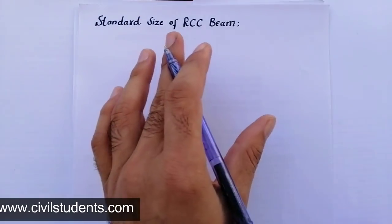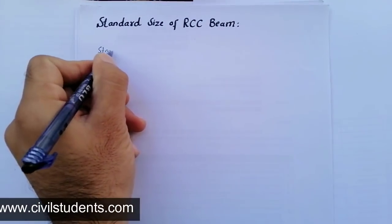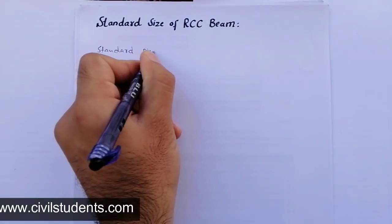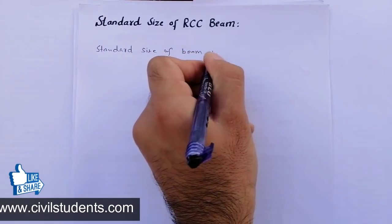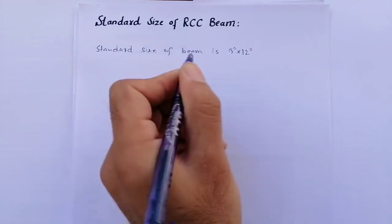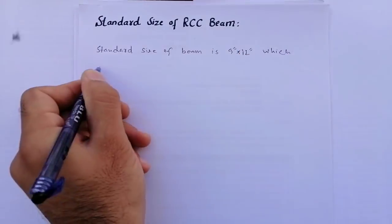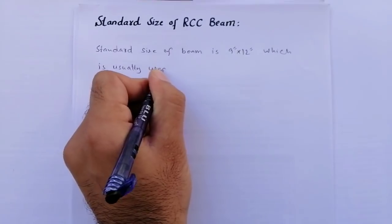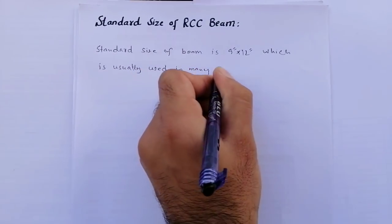So therefore there is not any standard size, but if we look at normal conditions, the standard size of an RCC beam is 9 inch by 12 inch — which is usually used in many residential buildings.